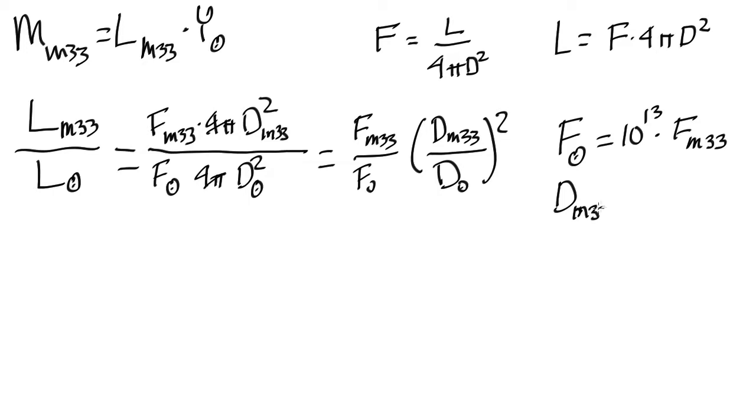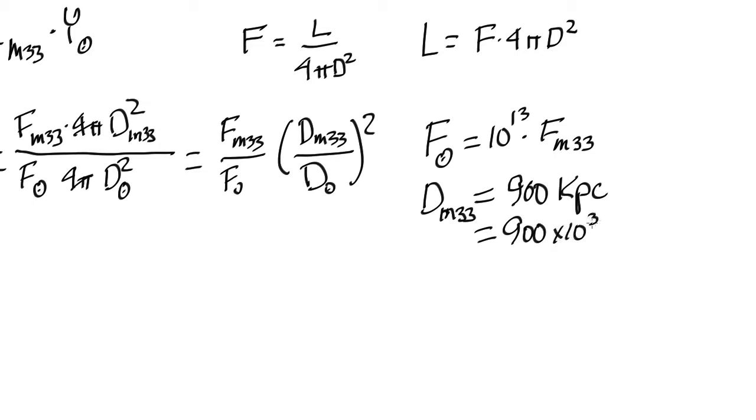The distance to M33, as measured with the Hubble Space Telescope using Cepheid variable stars, is 900 kiloparsecs. A kiloparsec is 1,000 parsecs, so that's 900 times 10 to the 3 parsecs, and a parsec is defined as 206,265 astronomical units. So there's 206,265 AU, which is the distance from the Earth to the Sun, per parsec. That means 900 times 10 to the 3 times 206,265 is the distance to M33. If you do that calculation, you find it's 1.86 times 10 to the 11 astronomical units.